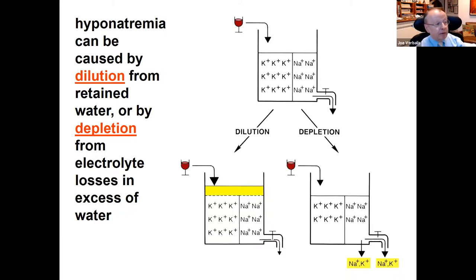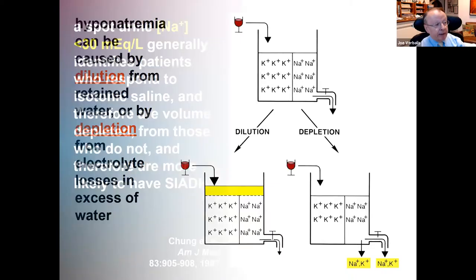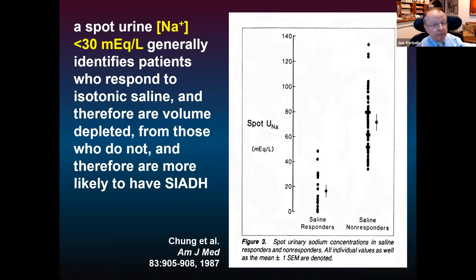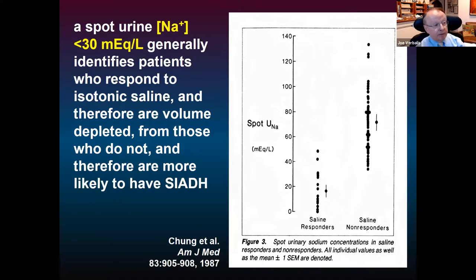Hypovolemic patients need solute and volume repletion, usually isotonic saline. Dilutional patients will not respond well to that — you may worsen their hyponatremia. They need removal of excess water via fluid restriction or more active therapies. If you don't make the right diagnosis first, you're destined to use the wrong therapy. The key test is a spot urine sodium, which is almost never obtained in the ER when patients first arrive.